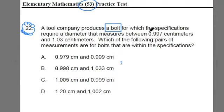Me? You? Anyone? I don't think so. We're really not used to working with decimals to the thousandths place in everyday life. It's just not something that we—hey, can I get a bolt that's between 997 thousandths of a centimeter, right?